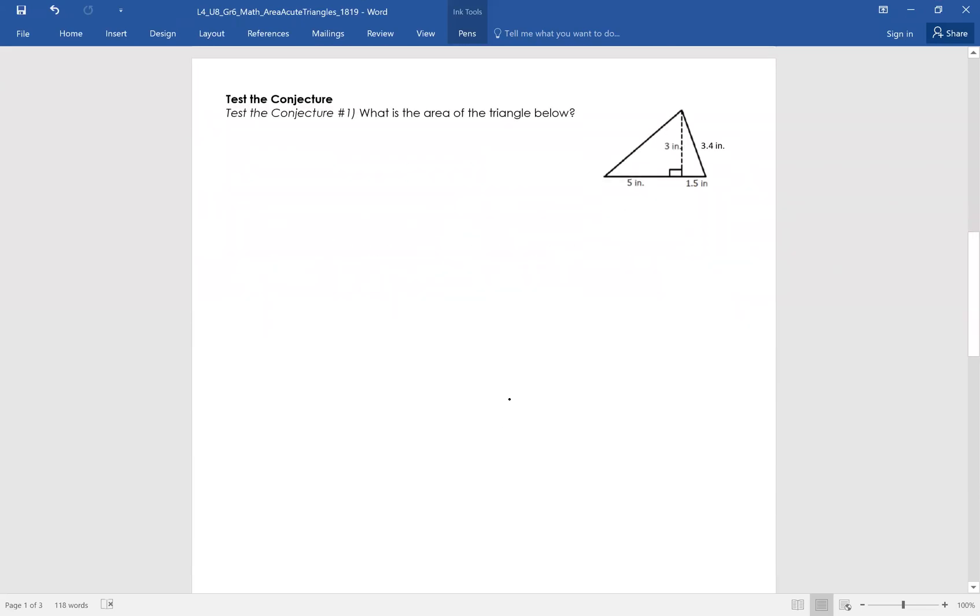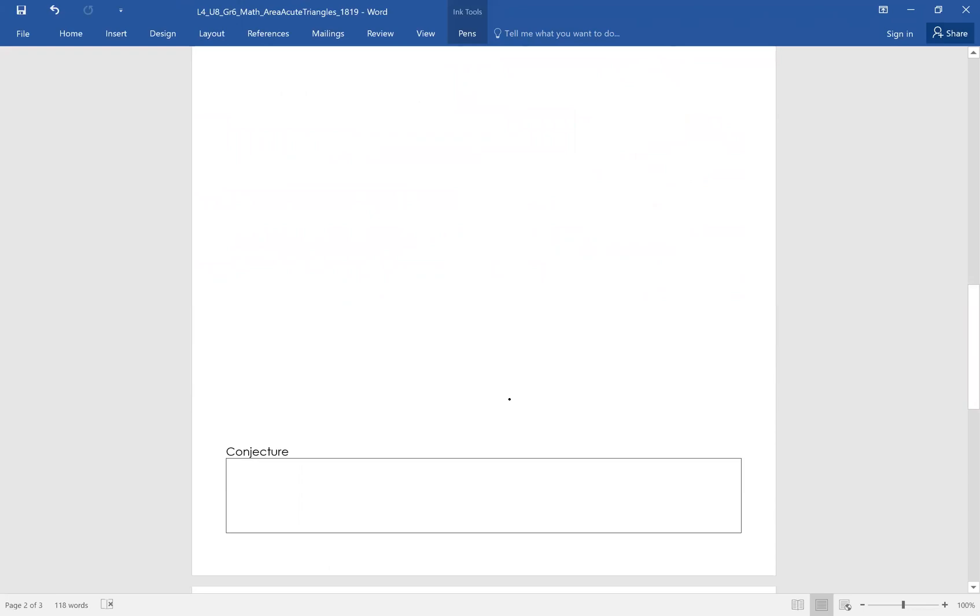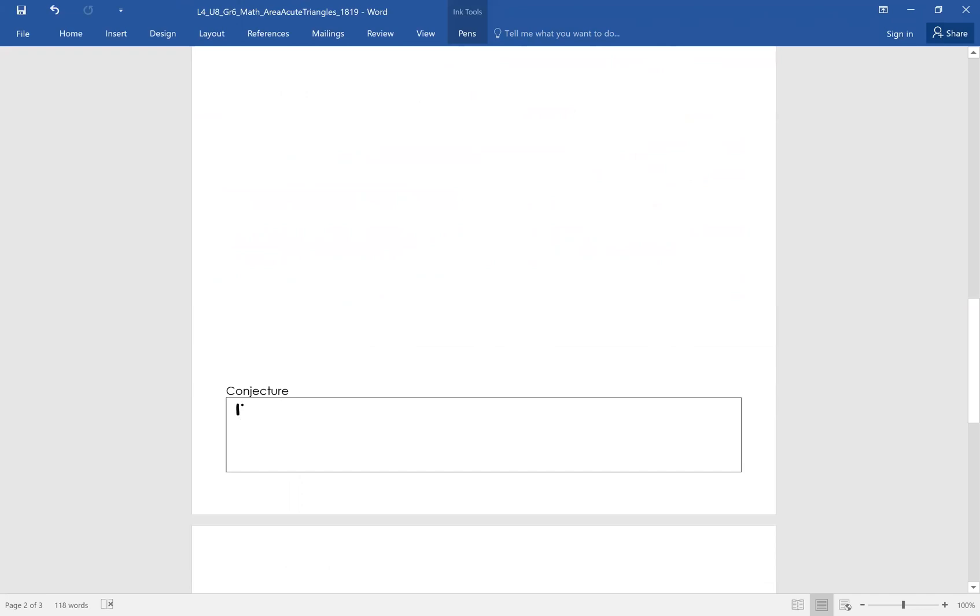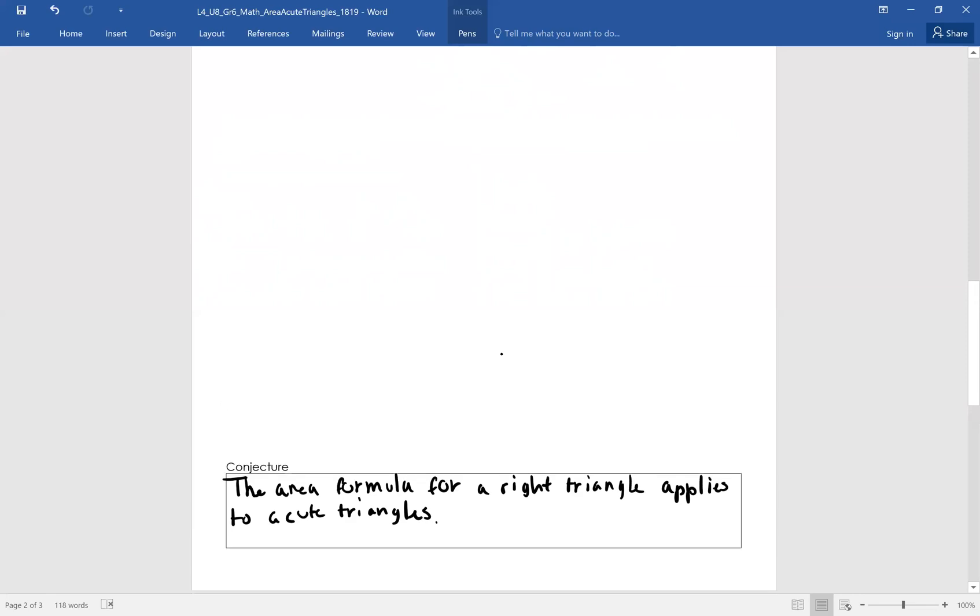Let's go ahead and move on to what our conjecture is. So the area formula for a right triangle applies to acute triangles. Some of you may still wonder what an acute triangle is, a right triangle. You can simply look both of those up on Khan Academy. You can look it up on mathisfun.com. Take those websites down and it'll give you a great explanation on the difference between those. All right. So let's go ahead and test this conjecture.